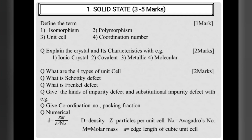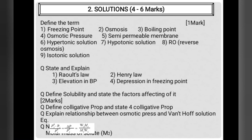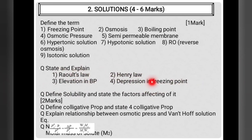Next topic: solutions and colligative properties. Important definitions include osmosis, boiling point, osmotic pressure, semipermeable membrane, hypertonic solution, hypotonic solution, reverse osmosis, and isotonic solution. For derivations and laws, Raoult's law, Henry's law, elevation in boiling point, and depression in freezing point are important — worth three to four marks, or two marks if just the law is asked.